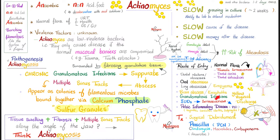With any of these infections, expect to see yellow sulfur granules, sometimes with yellowish discharge. What is the idea behind those yellow sulfur granules? Spoiler alert: they are not actually made of sulfur. They just look yellow like sulfur, but do not expect to find actual sulfur in them.